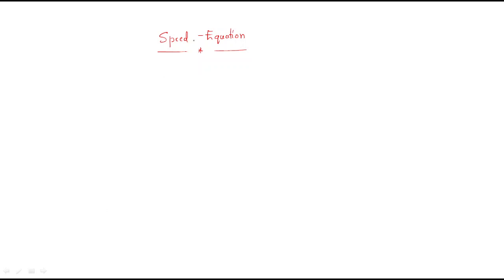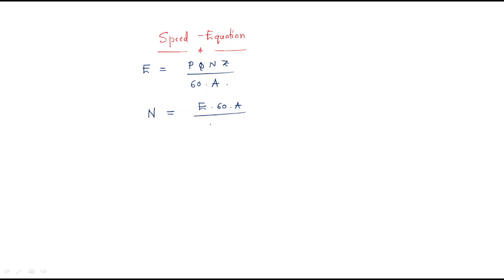In this session we will continue the next topic, the speed equation. We already discussed the EMF equation: EMF generated E = PφNZ / 60A. From this we can derive the speed formula: speed = E × 60A / PφZ.